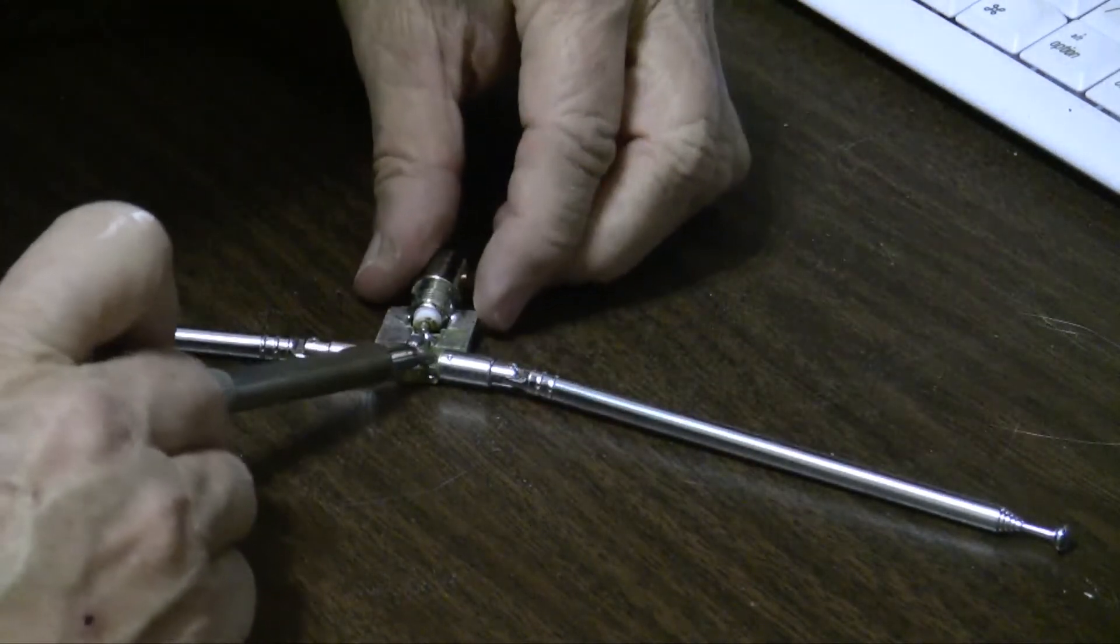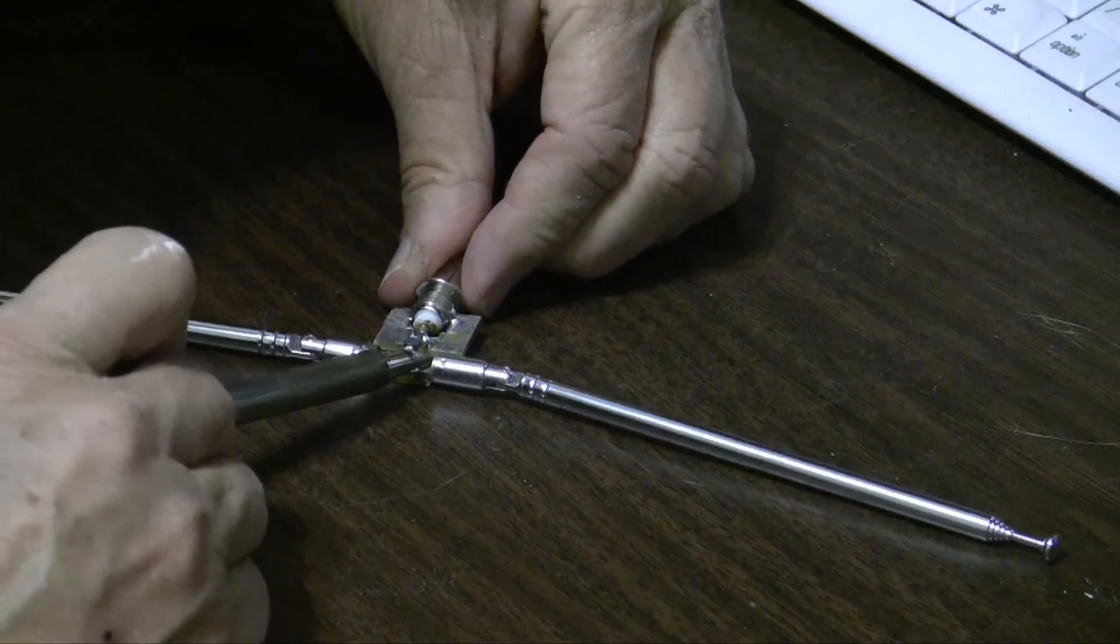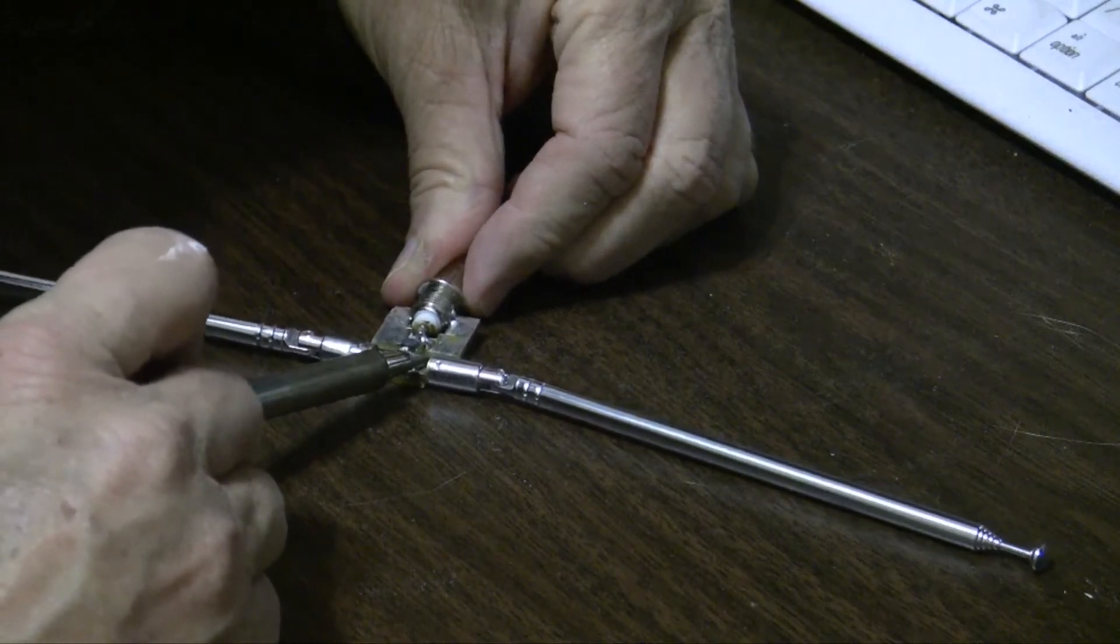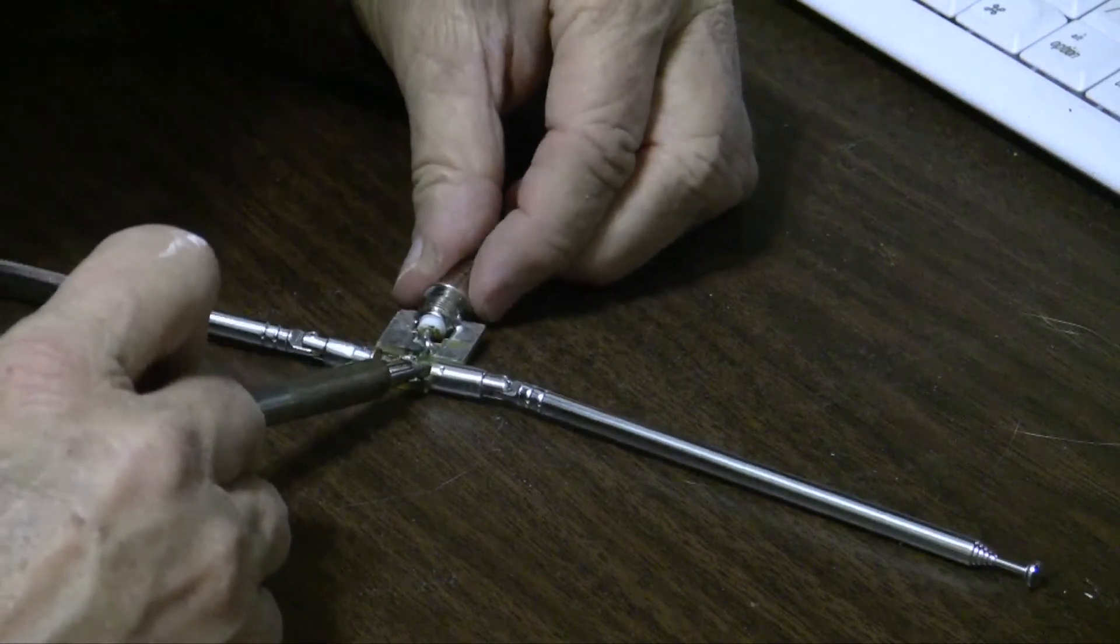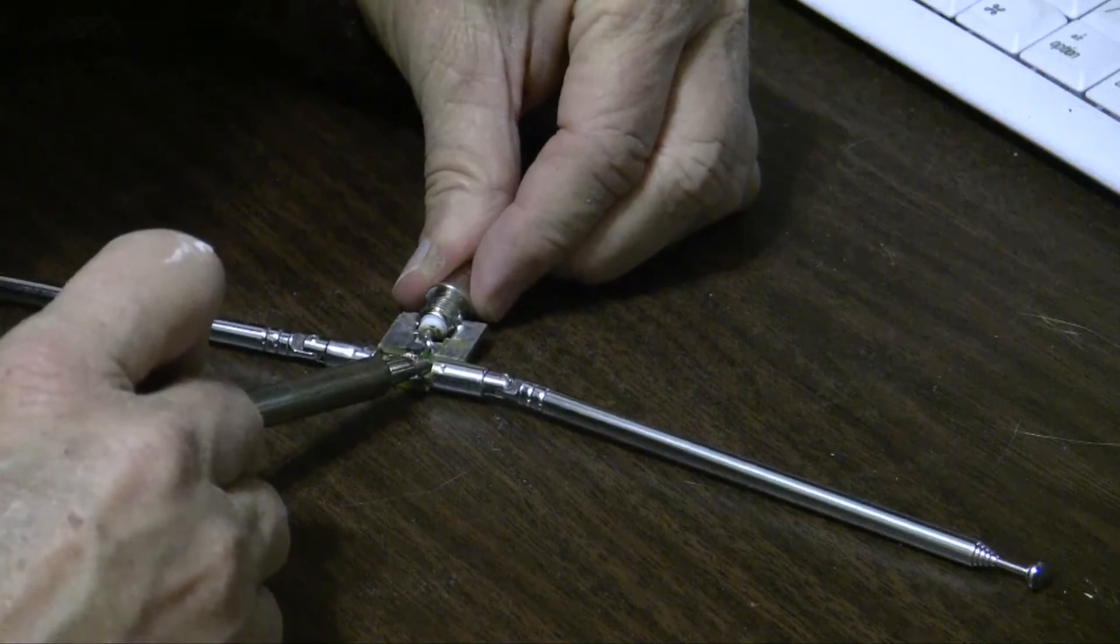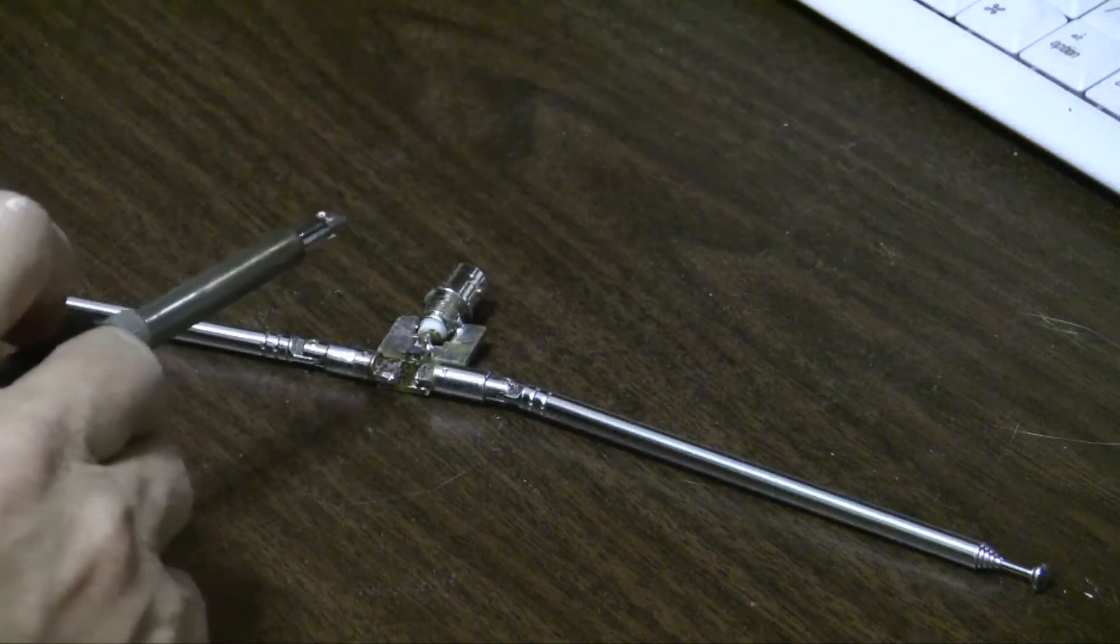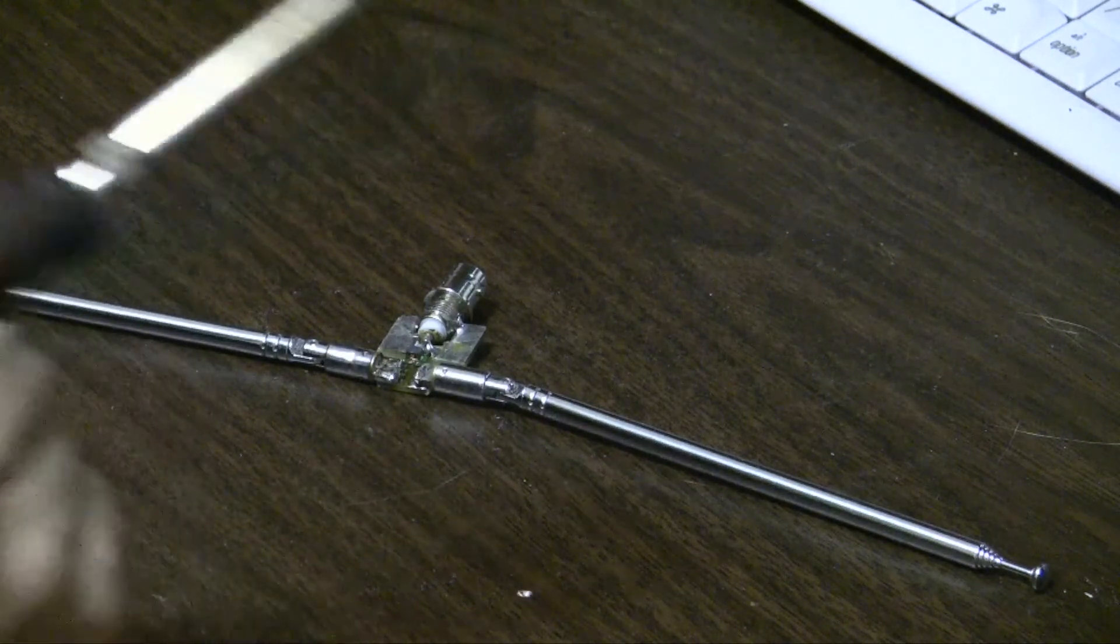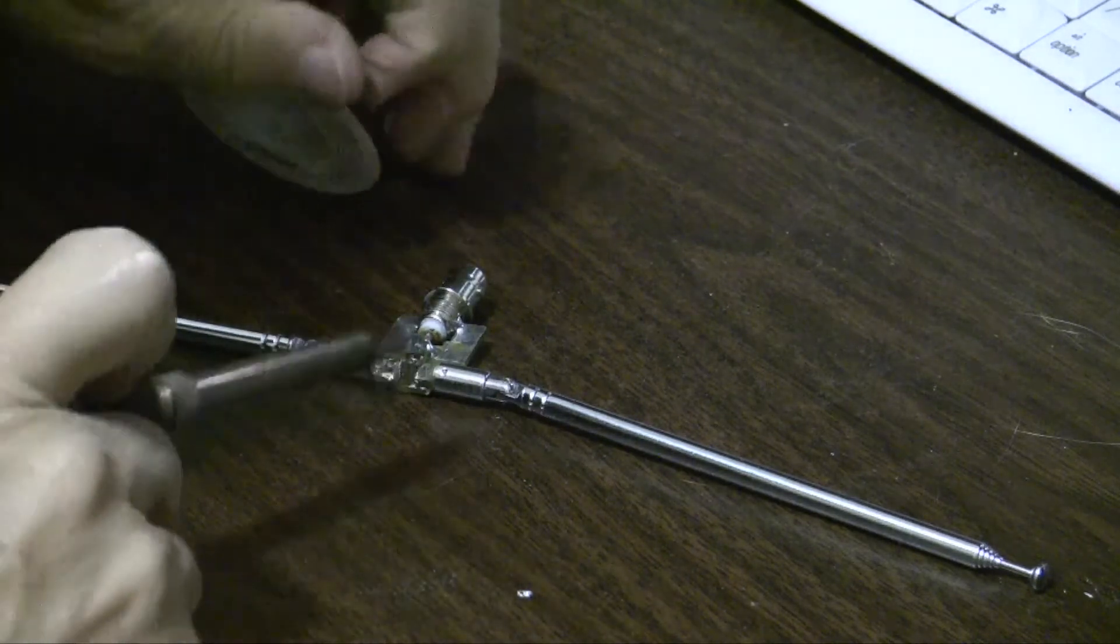I have a little kink in that just so that it can sit on there properly. Again, same thing. Put the iron on the brass here. Sort of finesse it into place. Then take a little bit of solder to make sure we got pretty good contact there.